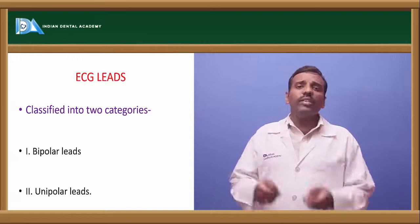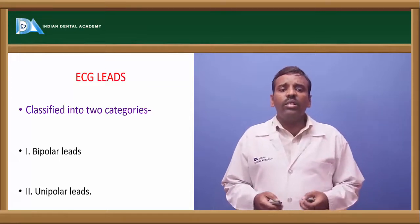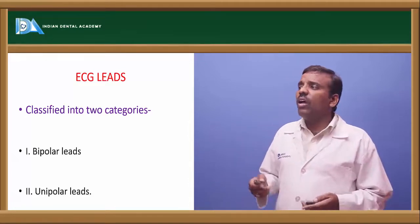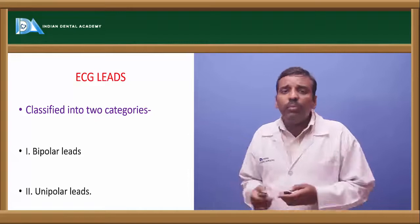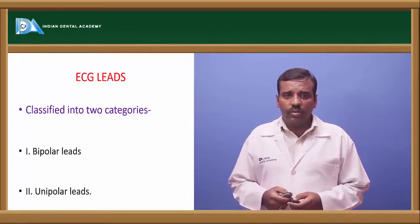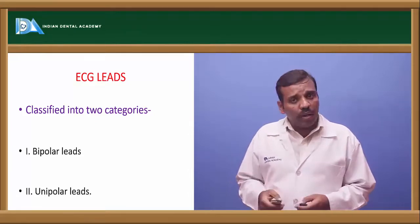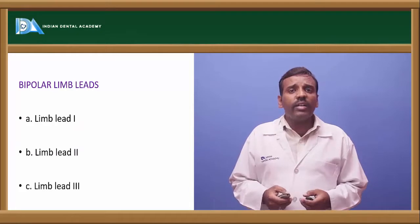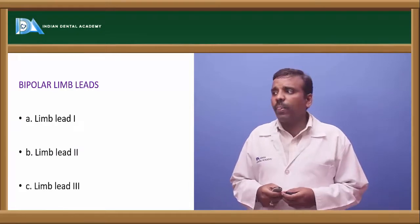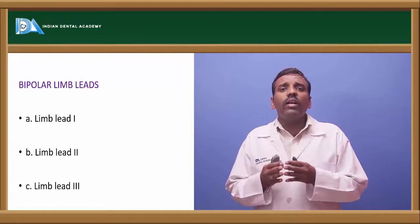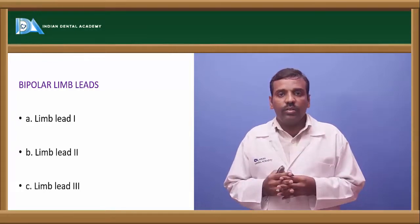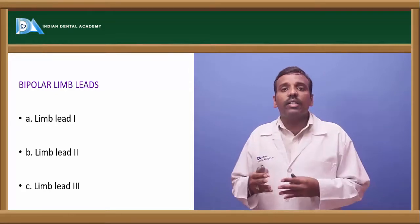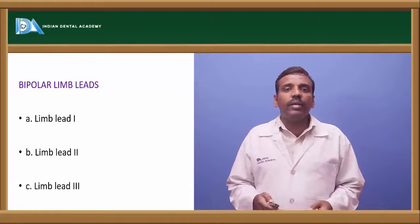ECG leads are of two types: bipolar leads and unipolar leads. Bipolar leads are divided into three types — the bipolar limb leads: limb lead one, limb lead two, and limb lead three.